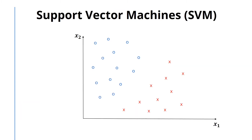Support vector machines, or SVMs, are another class of supervised learning algorithms that can be used for classification. In their simplest form, SVMs are linear classifiers. Let's assume there are two features in our input vector, x1 and x2. This picture shows our training data, where the blue points are labeled as plus 1, and red ones are labeled as minus 1. A linear classifier would use a line as a decision boundary. Points on one side of the line are classified as plus 1, and points on the other side are classified as minus 1.